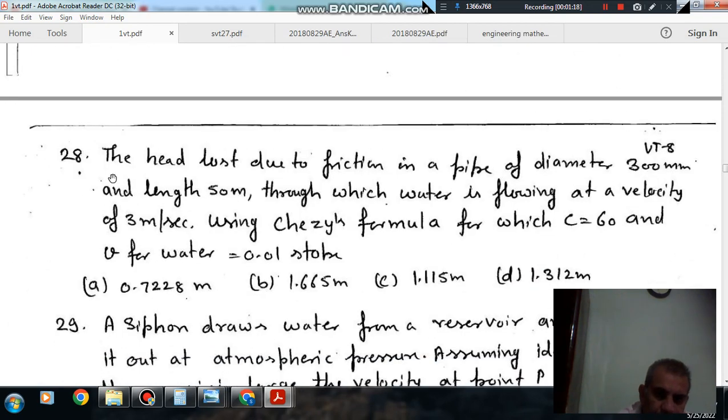Next, the head loss due to friction in a pipe of diameter 300 mm and length of 50 m, through which water is flowing at a velocity of 3 m per second.